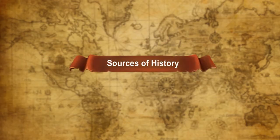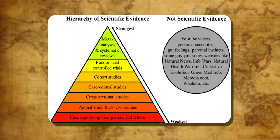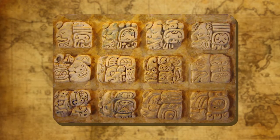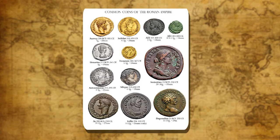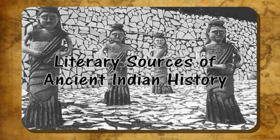To know history, we should know and study the evidences and records of our past. These evidences and records are known as the major source material or sources of history. Major sources of knowing the past may be divided into two categories: archaeological and literary sources.